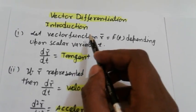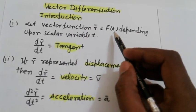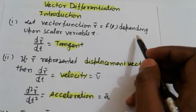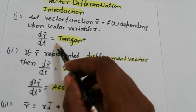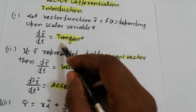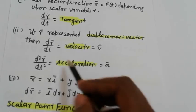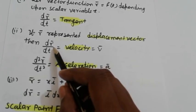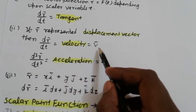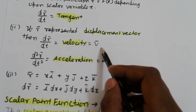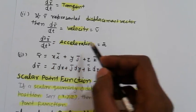Vector differentiation: first introduction. Let vector function r equal to f(t), depending upon a scalar variable t. Then dr/dt is represented by the tangent. If r represents a displacement vector, then differentiation of the vector with respect to t is called velocity. d²r/dt² gives acceleration.